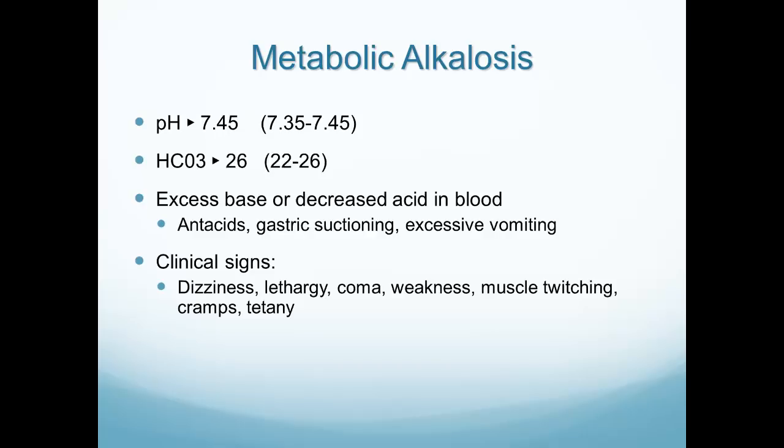Metabolic alkalosis: alkalosis means the pH is greater than 7.45, and metabolic means it's coming from the bicarb — so the bicarb must be greater than 26. This is caused by too much bicarb or too little acid. Excessive vomiting, a nasogastric tube suctioning acid out of the stomach, or excessive use of antacids can all reduce the amount of acid, leading to metabolic alkalosis.